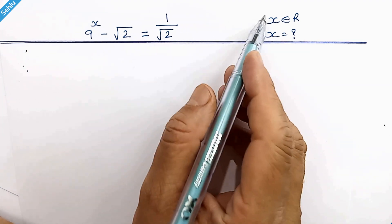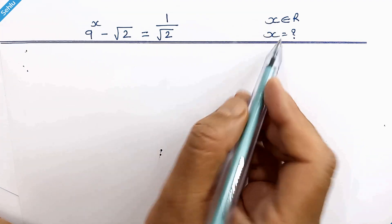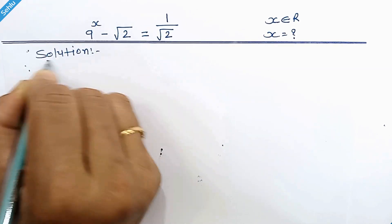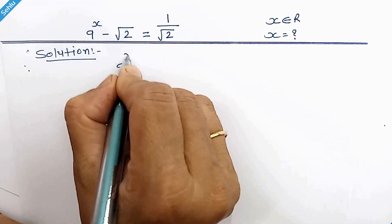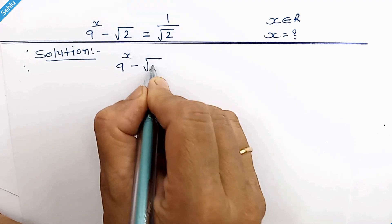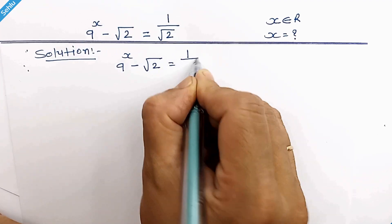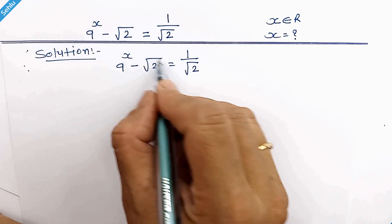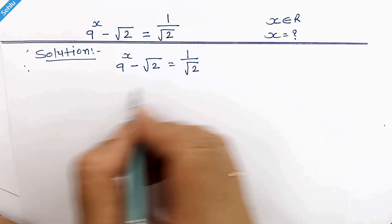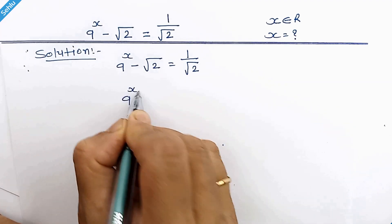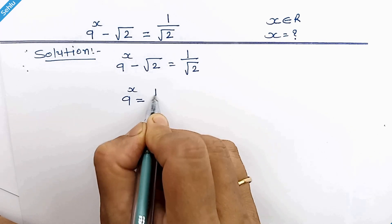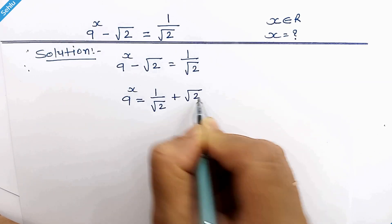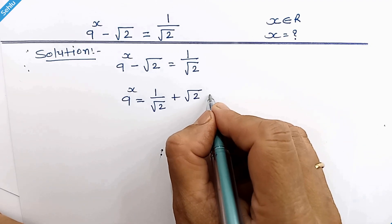Hello friends, we need to find the real value of x. The question is 9 to the power x minus square root of 2 is equal to 1 over square root of 2. In the first step, we will move the square root of 2 to the right-hand side and we will take LCM.